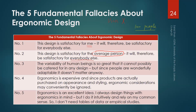The third fallacy is that the variability of human beings is so great that it cannot possibly be catered for in any design. This fallacy is related to the second. Humans are very different from each other in their physique, body sizes, and height. People from different ethnic backgrounds and different regions vary greatly. So it seems impossible to design something suitable for the majority or all of the people.